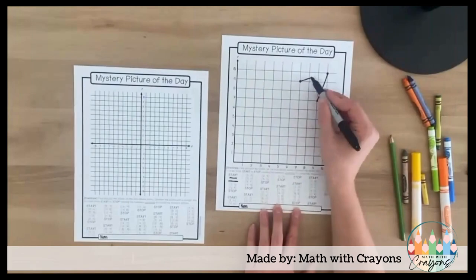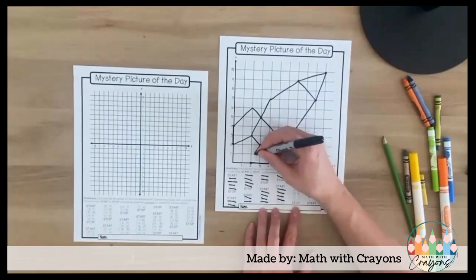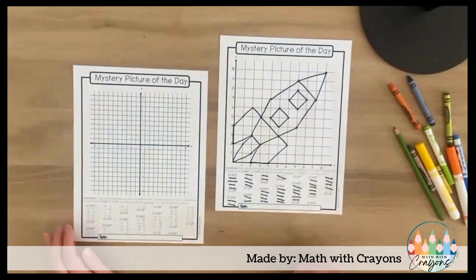Have students at different levels? Great! This download includes two graphs. Page one is a quadrant one graph perfect for small groups or students needing a little bit more practice and help.